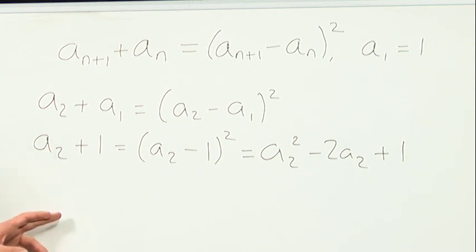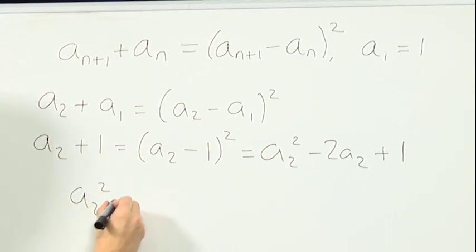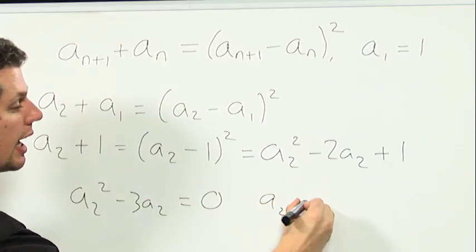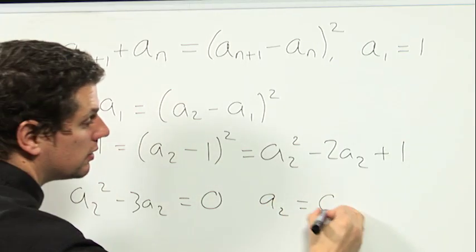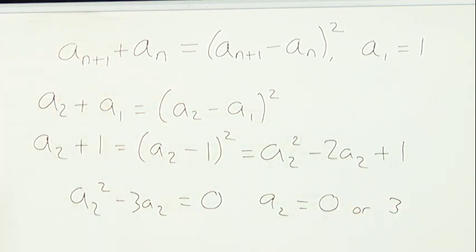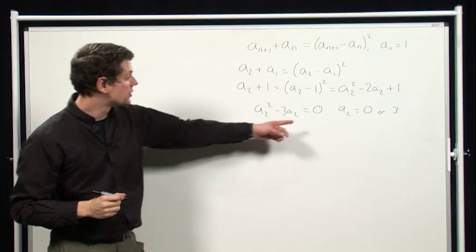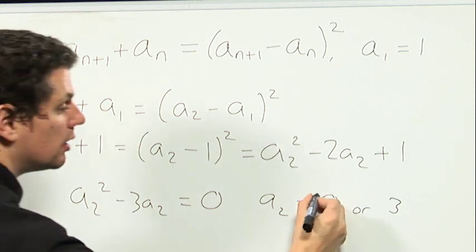Now, if we gather terms all on one side, we get a2 squared minus 3a2 equals 0. That's a quadratic equation in a2, so either by solving it using the quadratic formula or factorising it, we can see that a2 has to be 0 or 3. But the problem tells us that the numbers an have to be positive, so a2 can't be 0, so it's got to be 3. So we've got a2 is 3.